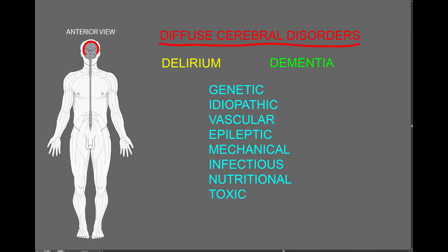Either of these types of seizures causes diffuse cerebral cortical dysfunction. The mechanical disorder head trauma may cause a brief episode of diffuse cerebral cortical dysfunction called concussion, or with more severe injury to the head, there may be long-term widespread diffuse traumatic brain injury. Many metabolic disorders, such as low blood sugar, are common causes of delirium.